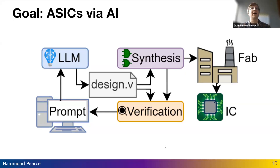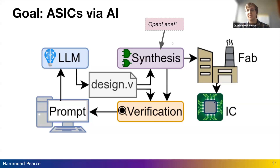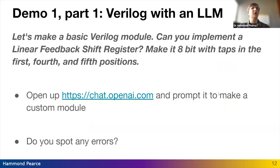Our goal is to produce ASICs. We want to give prompts to a language model and get out hardware. In this talk we'll focus on the loop between the prompt, the language model, getting a design, and then verifying that design. After you have the design you need to synthesize it — that's what turns your design into an ASIC. Fortunately, OpenLane, handled very well by eFabless, makes this really easy: you go from design files to GDS2 and they'll actually fabricate it, which is really cool.